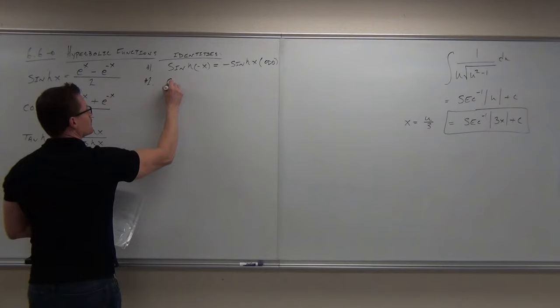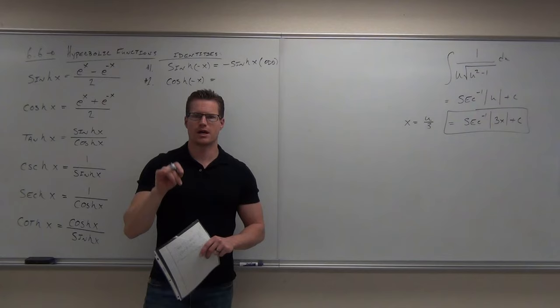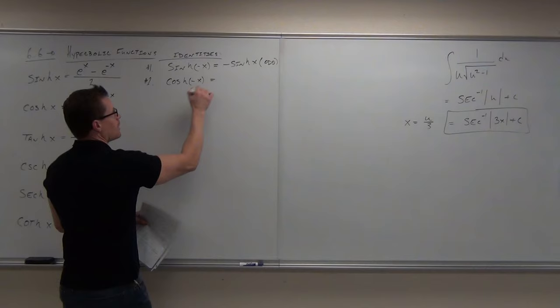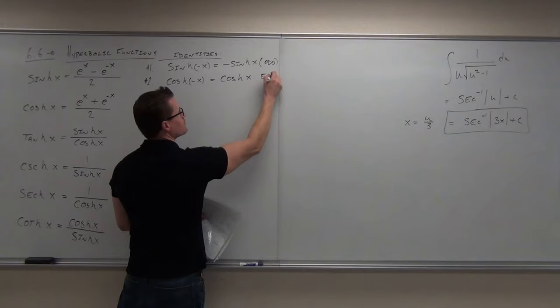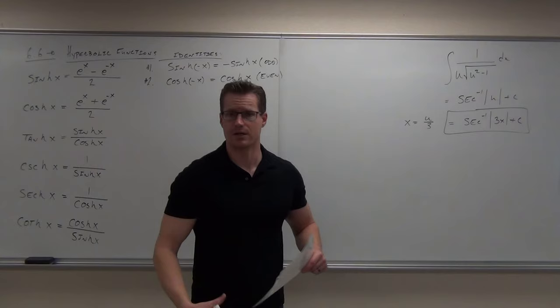Now cosh — think back to cosine. Cosine is even because it's symmetric across the y-axis. Cosh of a negative x actually gives you back the positive — cosh(-x) = cosh(x). That's saying cosh is an even function. Those are two identities for us.